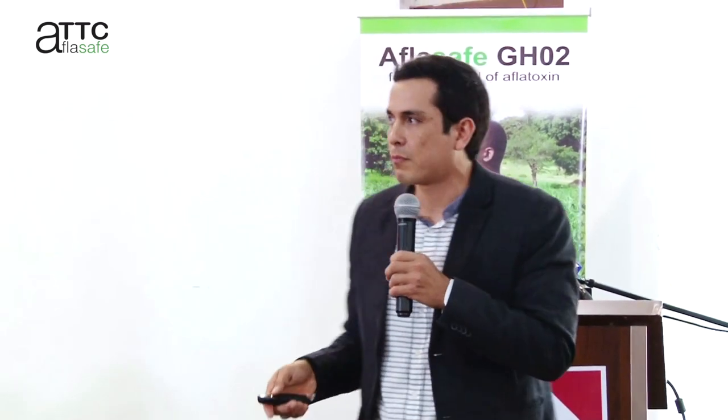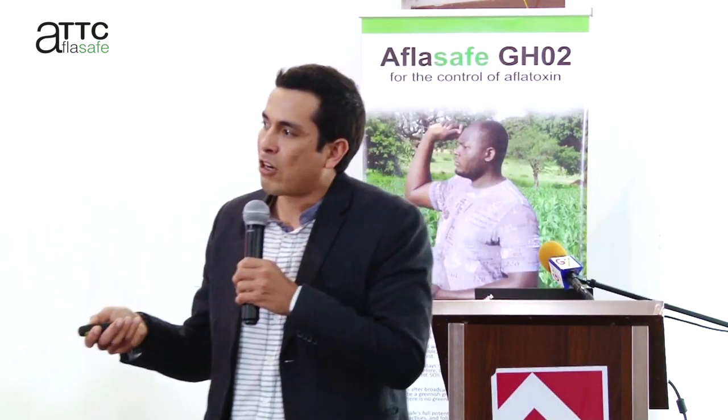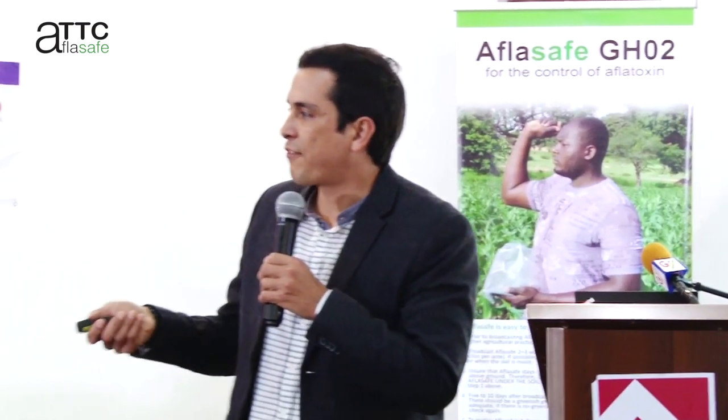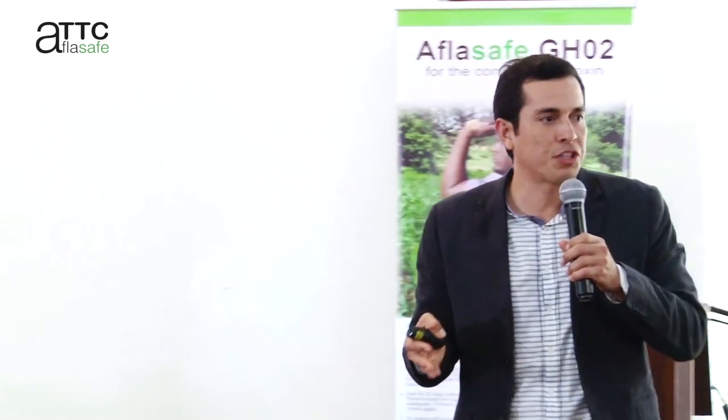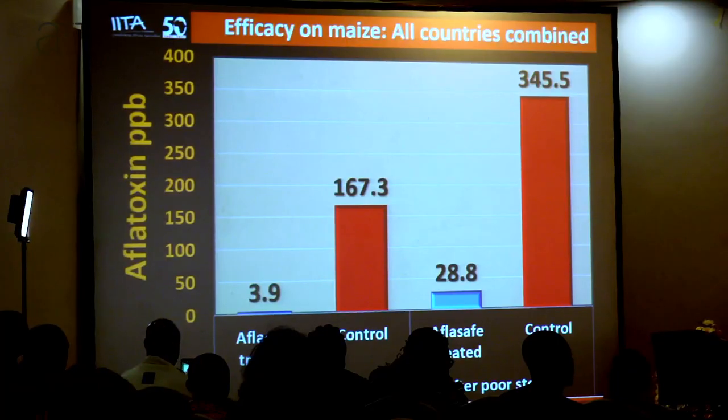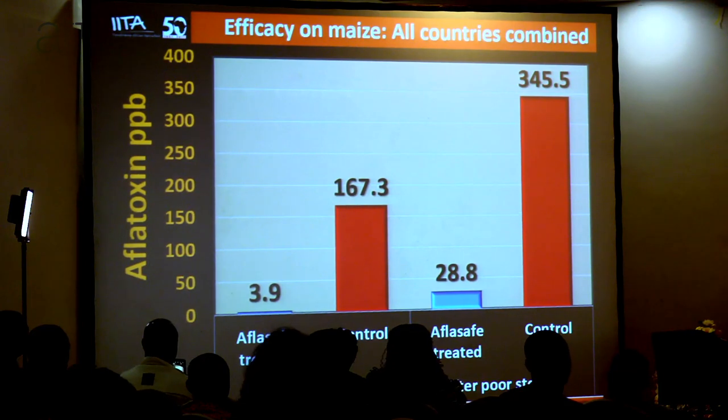Some cases have low levels, but many others have extremely high levels — 1,000 or 2,000 parts per billion. These benefits are obtained at harvest, and also after poor storage. We do not recommend storing under suboptimal conditions, but if those conditions occur and the crop has been treated, we still have some protection — 90% less aflatoxin than untreated crops stored under suboptimal conditions. So we have benefits both at harvest and after poor storage.